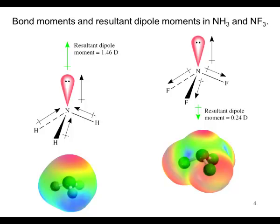Bond moments and the resultant dipole moments are shown here for ammonia and nitrogen trifluoride. In the case of ammonia, the electron attraction is toward the nitrogen, which is more electronegative than the hydrogen, and toward the lone pair. The lone pair has a strong electron pull.